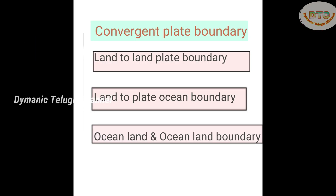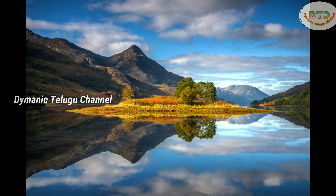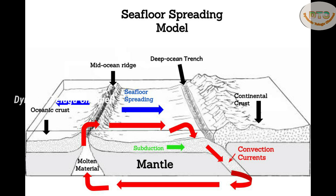The three types are: Land-to-Land Plate Boundary, Land-to-Ocean Plate Boundary, and Ocean-to-Ocean Plate Boundary. In a Land-to-Land boundary, a lighter plate and a higher density plate collide. In a Land-to-Ocean boundary, the denser oceanic plate subducts, creating mountain ranges. In Ocean-to-Ocean boundary, sea floor spreading occurs.